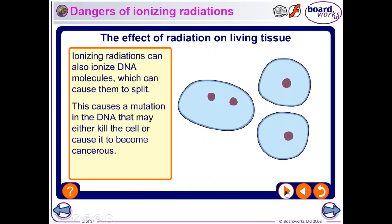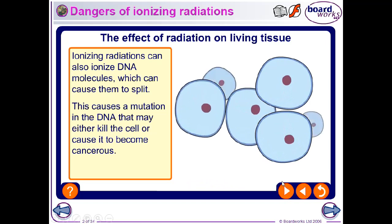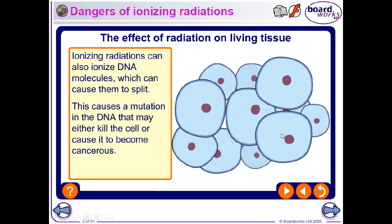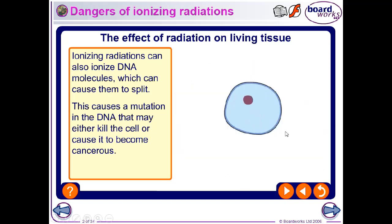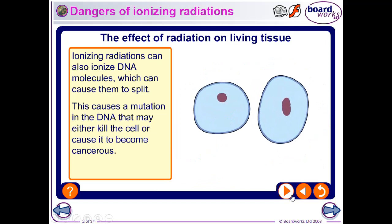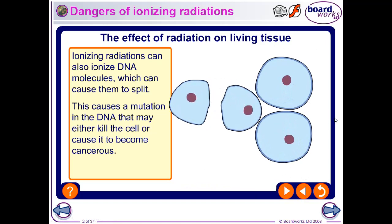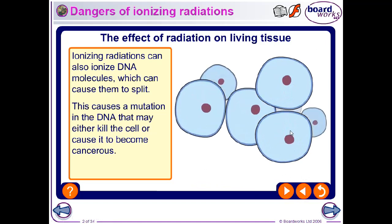Damage to DNA and mutations could cause the cell to die, or they could cause a cell to start to reproduce uncontrollably. An uncontrolled reproduction of a cell inside our bodies is what can lead to cancer or a tumor.